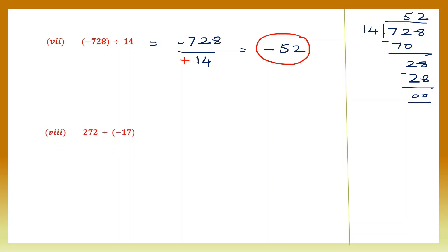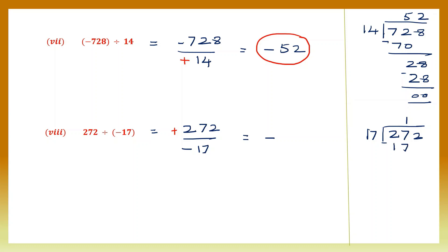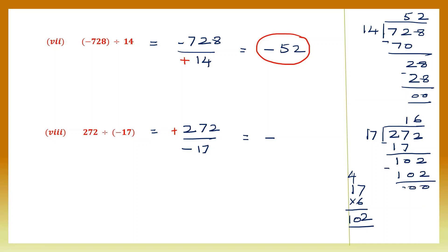Next question: 272 divided by minus 17. 272 gets the plus sign — signs are different, so the answer will be negative. Dividing 272 by 17: 17 ones are 17, bring down to get 102. Try 17 into 6 — 6 sevens are 42 carry 4, 6 ones are 6 plus 4 is 10, giving 102. So 17 into 6 is 102. Quotient is 16, so the final answer is minus 16.